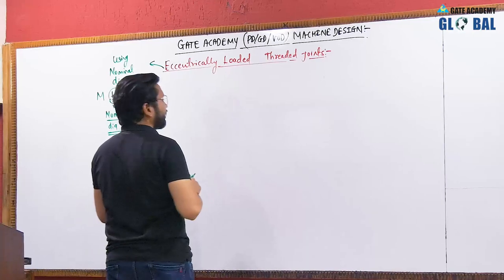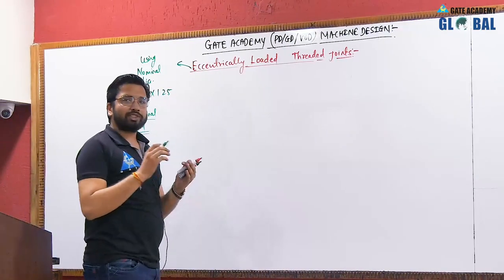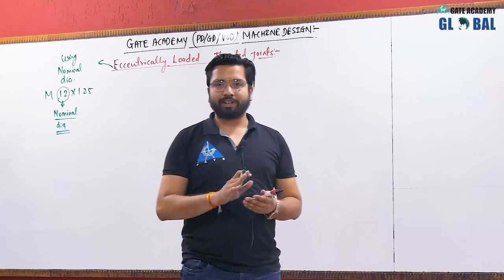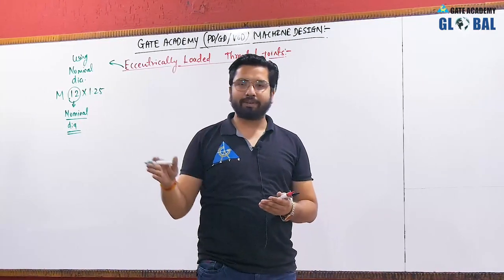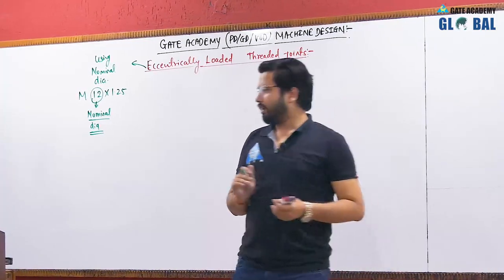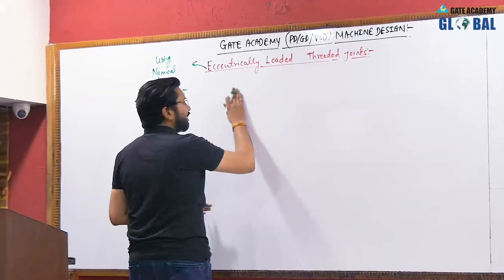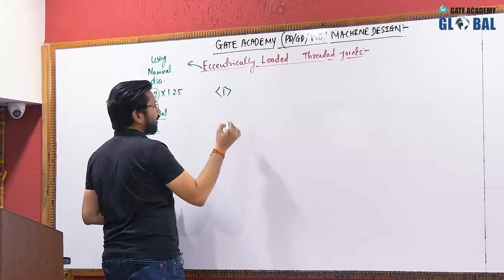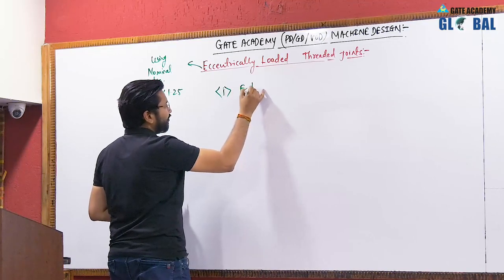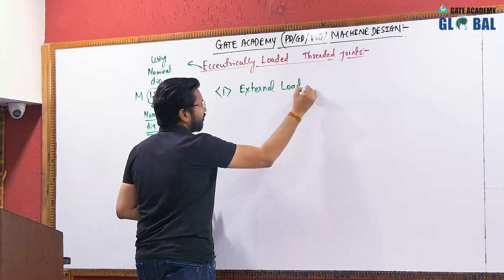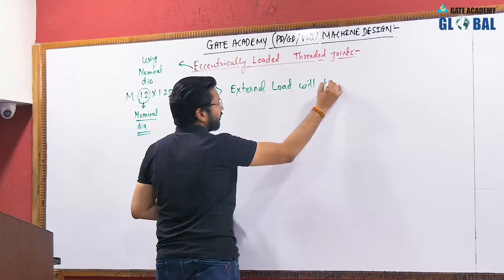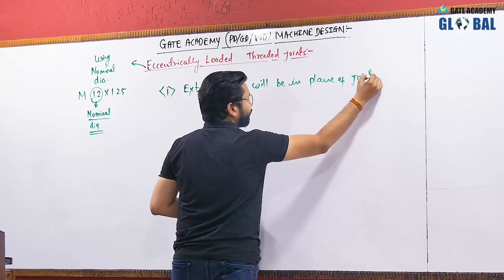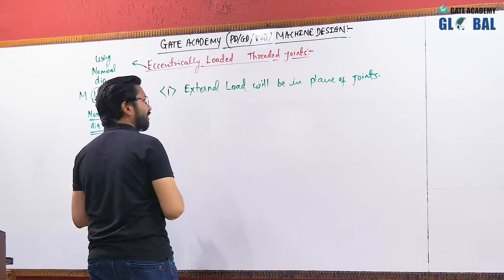Let us start with eccentrically loaded joints. In eccentrically loaded joints, the line of action of the external load will not pass through the centroid. There will be an eccentricity between the centroid of the connection and the external load. These eccentrically loaded joints can be categorized into three categories. In the first case, the external load will be in the plane of the joint.